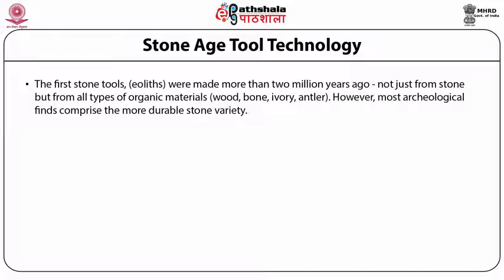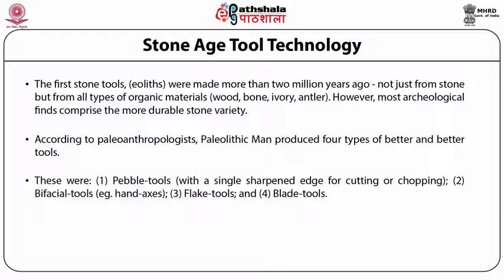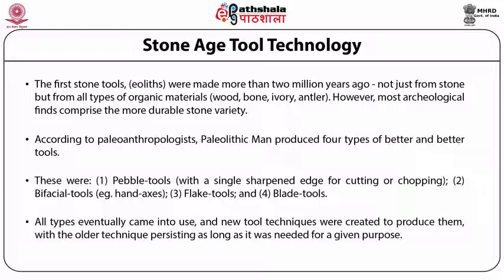The first stone tools were made more than 2 million years ago, not just from stone but from organic materials like wood, bone, ivory, and antlers. The oldest human tools were simple stone choppers such as those unearthed at Olduvai Gorge in Tanzania. Paleolithic men produced four types of progressively better tools: pebble tools with a single sharpened edge for cutting or chopping, bifacial tools like hand axes, flake tools, and blade tools. All types eventually came into use and new tool techniques were created.